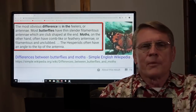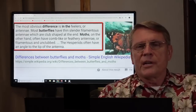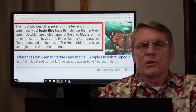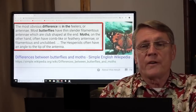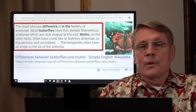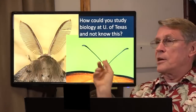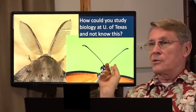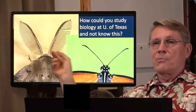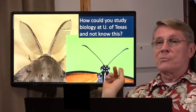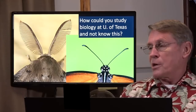The most obvious difference is in the antennae. Most butterflies have thin, slender filament antennae which are club-shaped at the end. Moths, on the other hand, have a comb-like or feathery antenna. Here is a moth, and this is a butterfly — their antennae are very different. Butterflies are not modified moths; each one works amazingly well for all sorts of sensory functions.